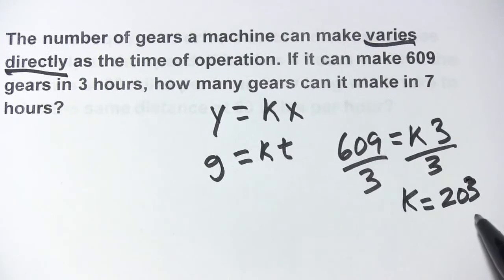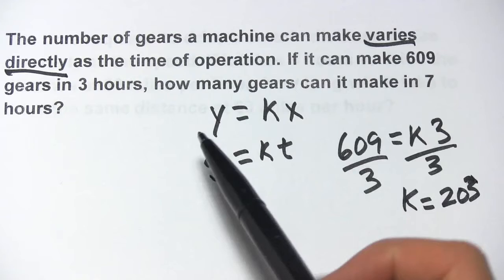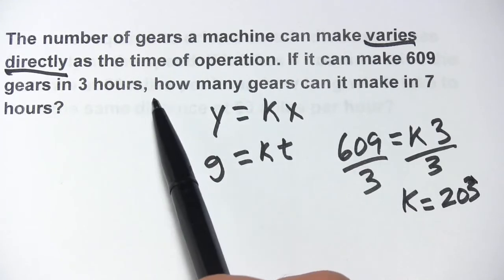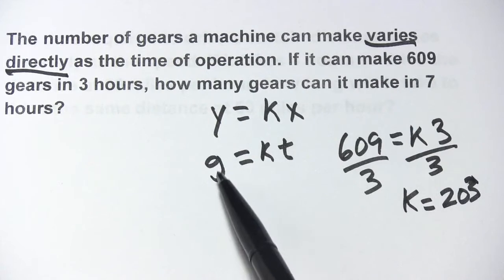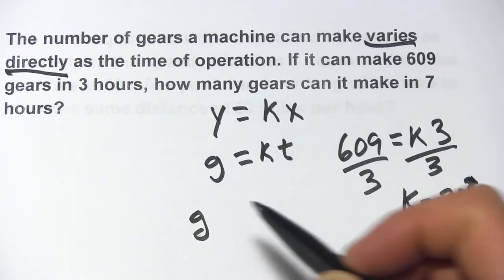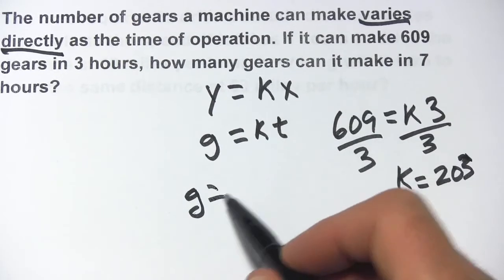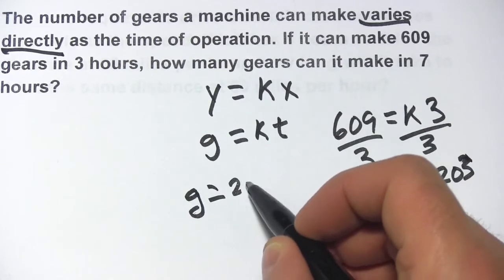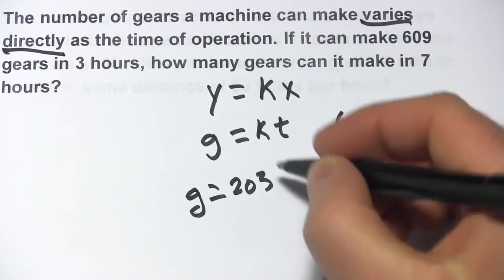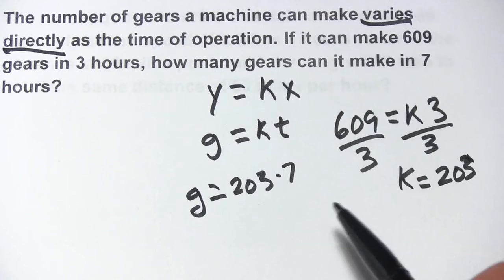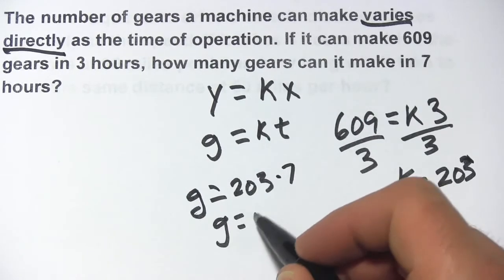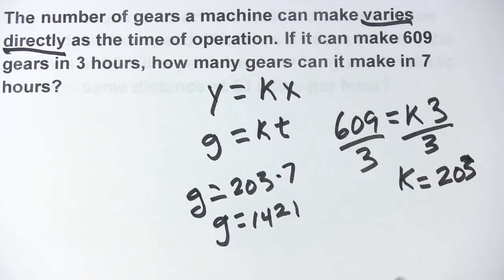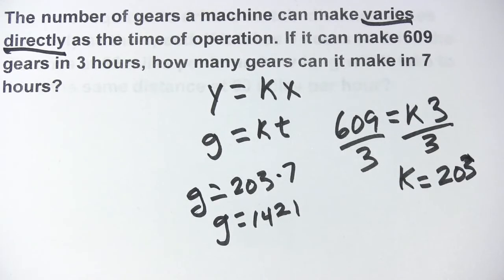So now we have our constant of variation. Let's see what the rest of the problem says: how many gears can it make in seven hours? This time we don't know what g is, so we'll just put that in as g. We do know what k is now — it's 203 — and they're telling us seven hours. So we just need to multiply 7 times 203, and that's 1421. So in seven hours, it can make 1421 gears.